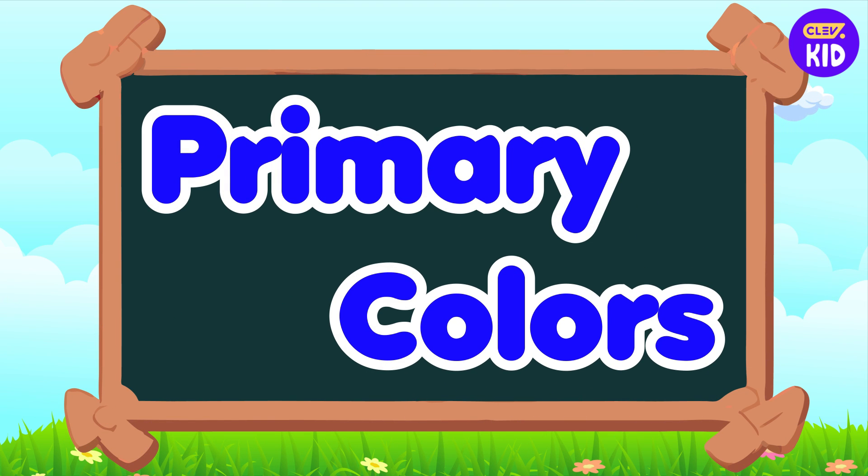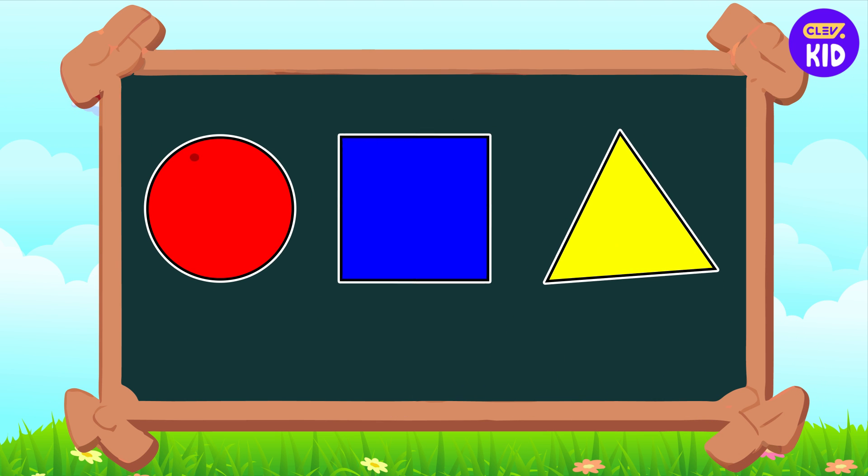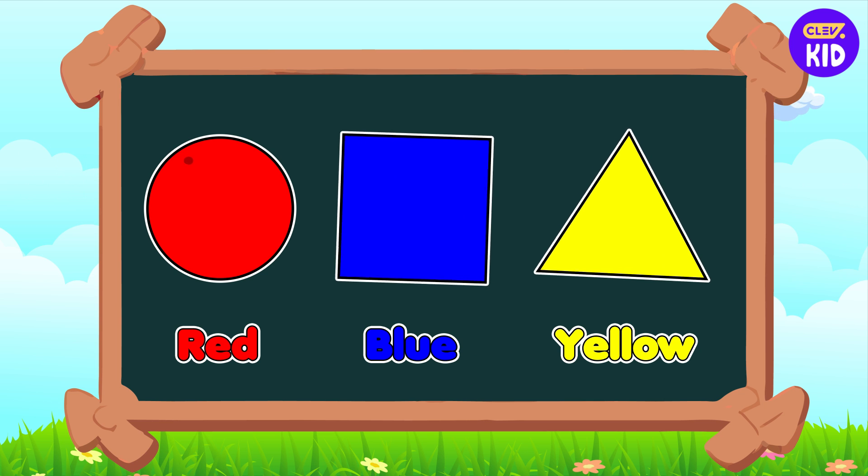Let's begin with the primary colors. The primary colors are red, blue, and yellow. They're called primary because they can't be made by mixing other colors. They're like the starting point for all the colors. We can create many other colors just by mixing them together.